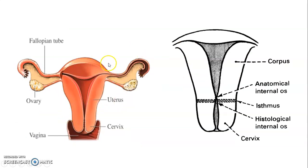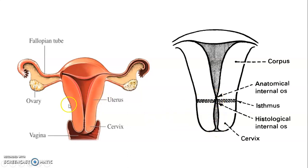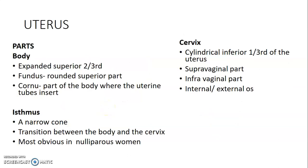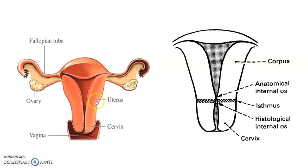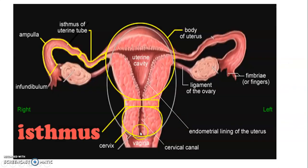The body of the uterus includes the fundus and the cornu where the uterine tubes enter. The cervix has a supravaginal and an infravaginal part towards the vagina, with an internal os and an external os. The isthmus is the narrowest portion where there is a transition between the body and the cervix. The endometrial lining is within the body, and the fallopian tube connects at the cornu.